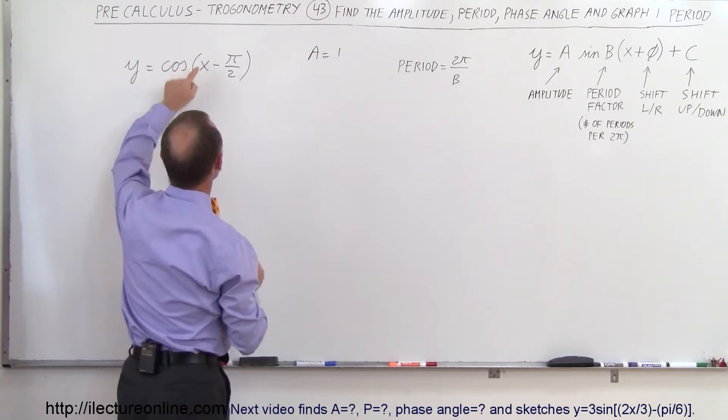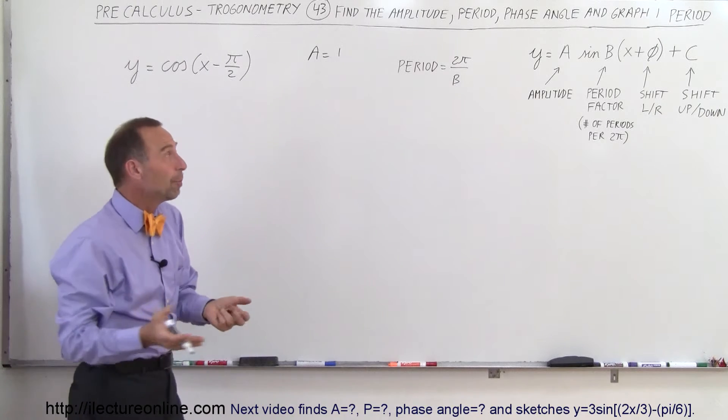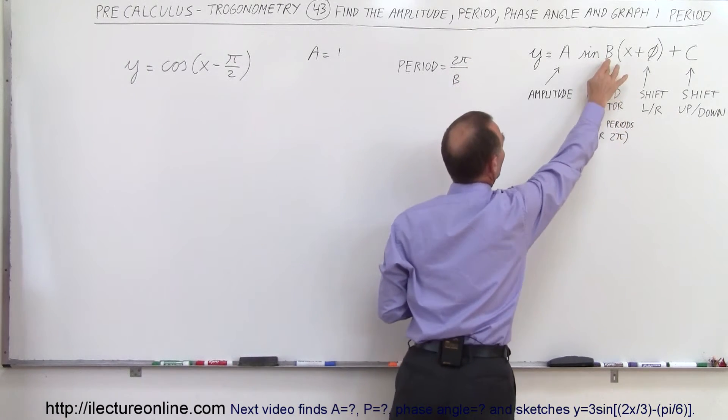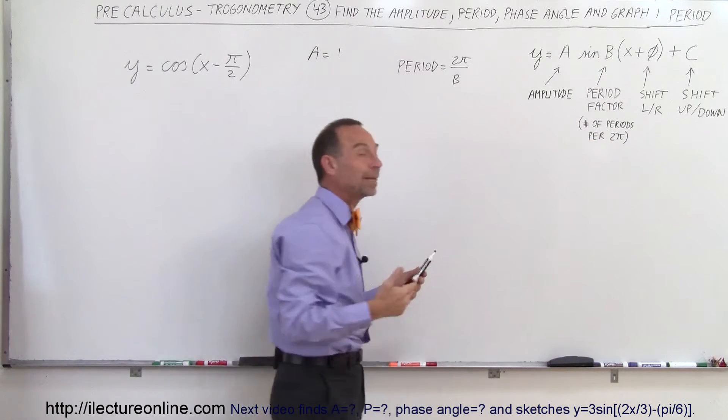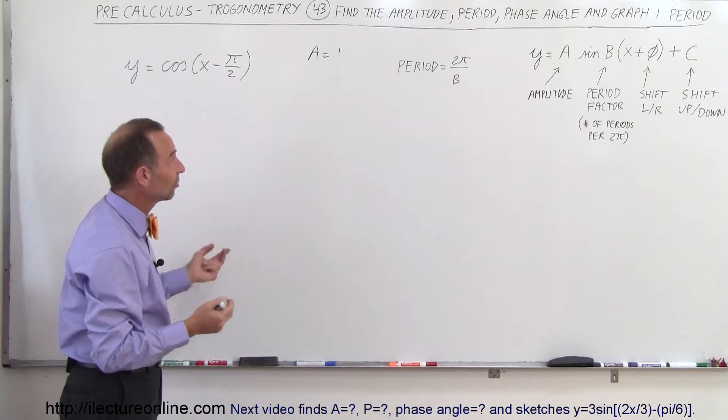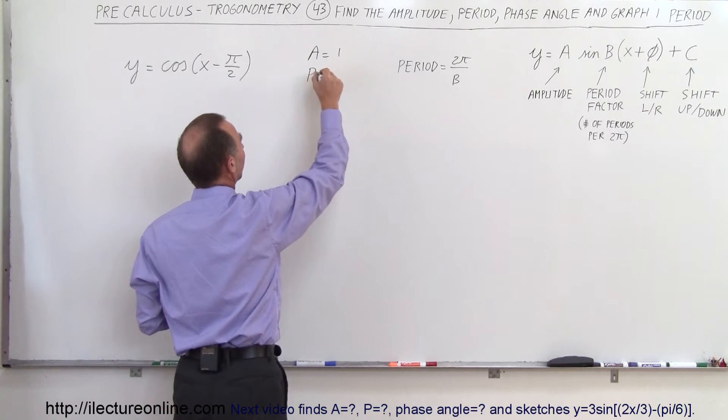And the period, since there's no number in front of the x, has to be 2π. Remember, the period is 2π divided by b. b is that period factor that determines how many periods there are in a 2π range on the x-axis. Since there's just a 1 there, the period equals 2π.